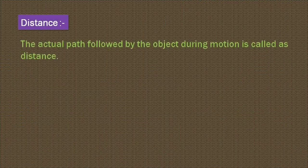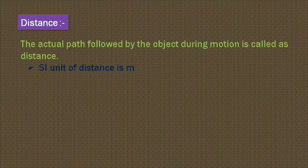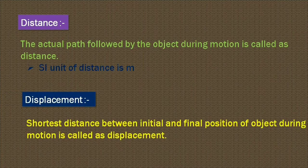We can now define: the actual path followed by the object during its motion is known as distance, and it is measured in meters. Displacement is the shortest distance between the initial and final position of the object during the motion, and its SI unit is also meter.